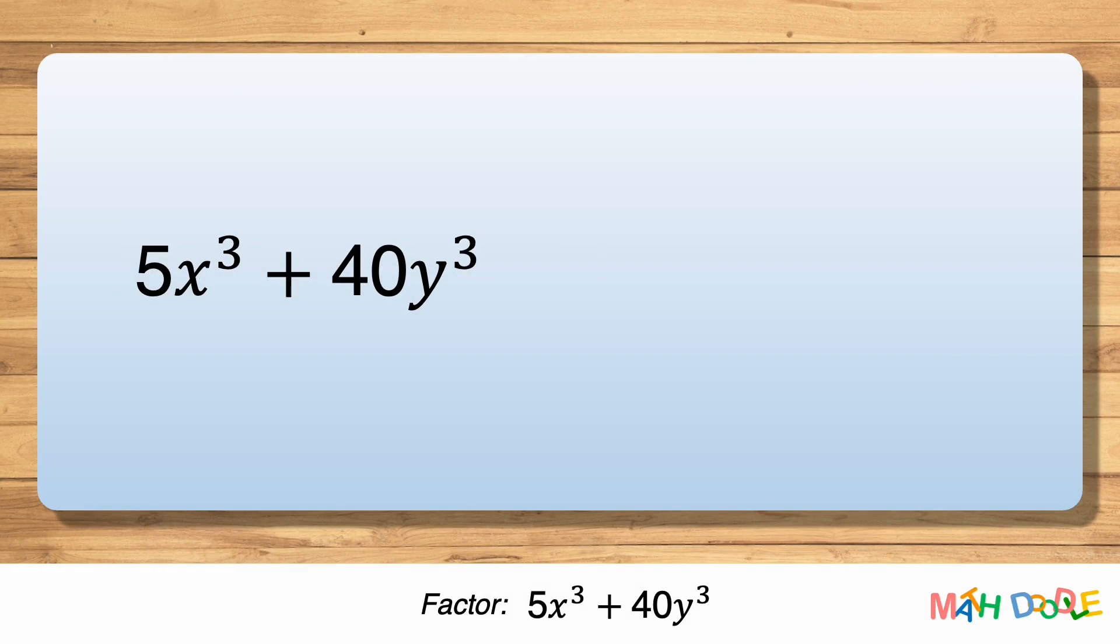To factor this binomial, let's first see if there is a greatest common factor of its terms. We can see that the greatest common factor of the terms is 5, so let's factor it out.